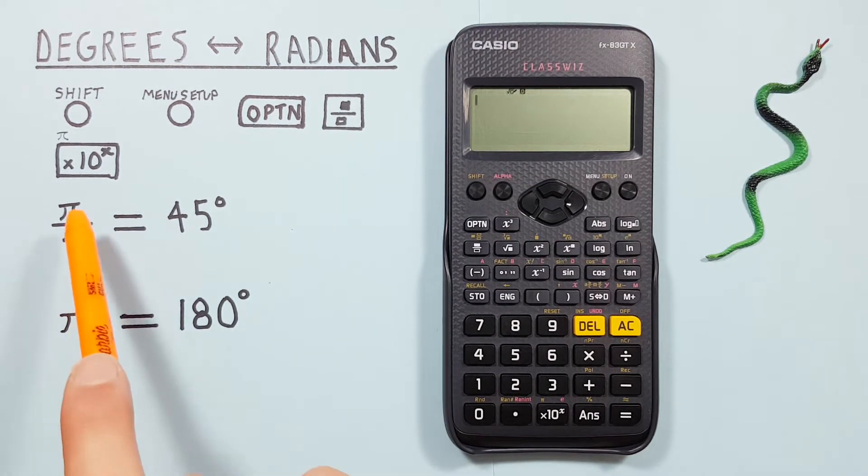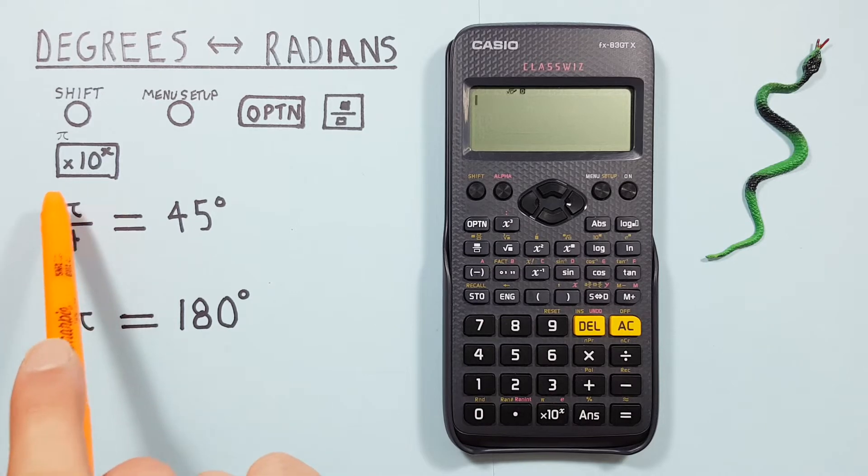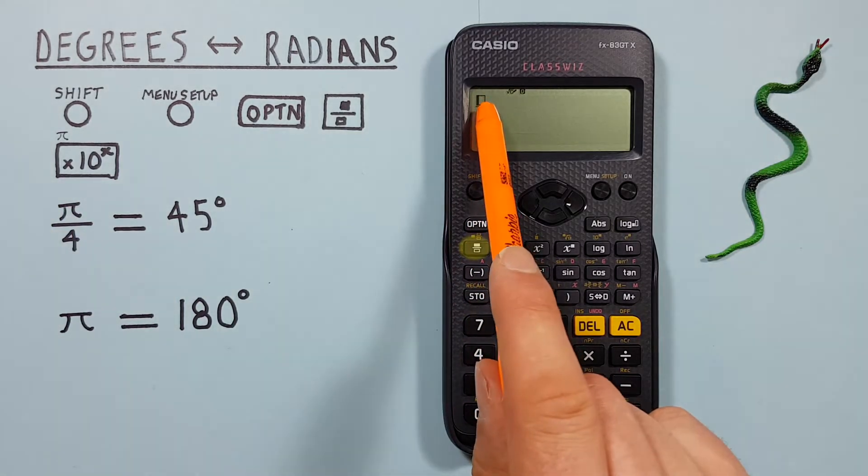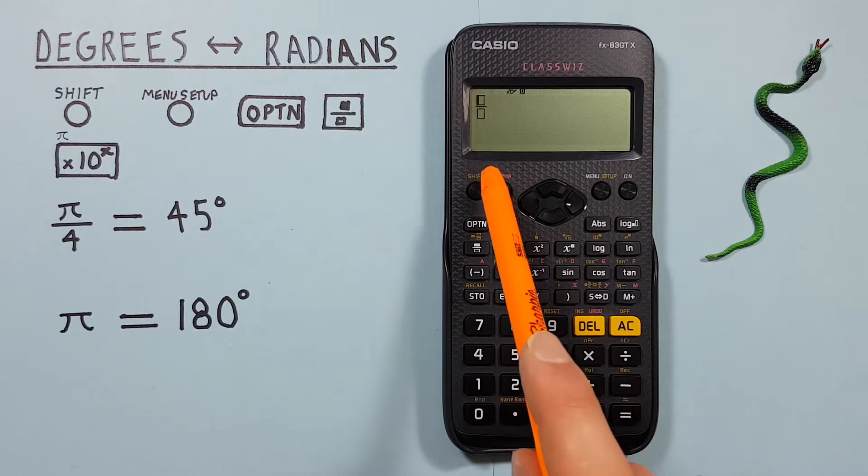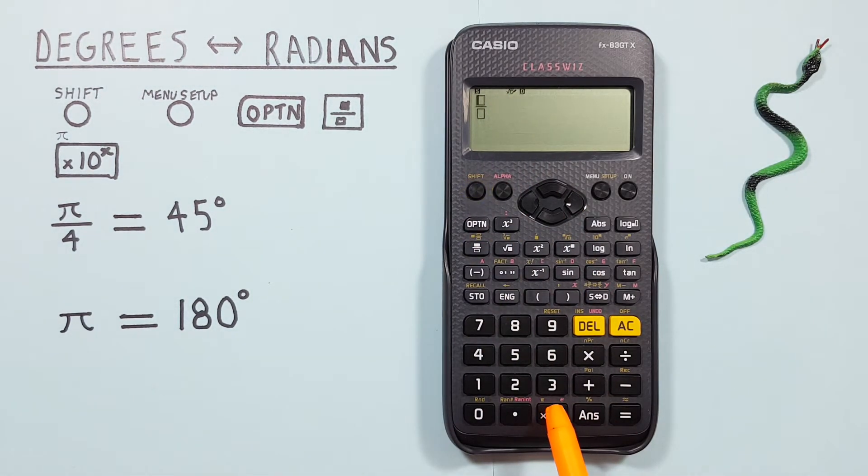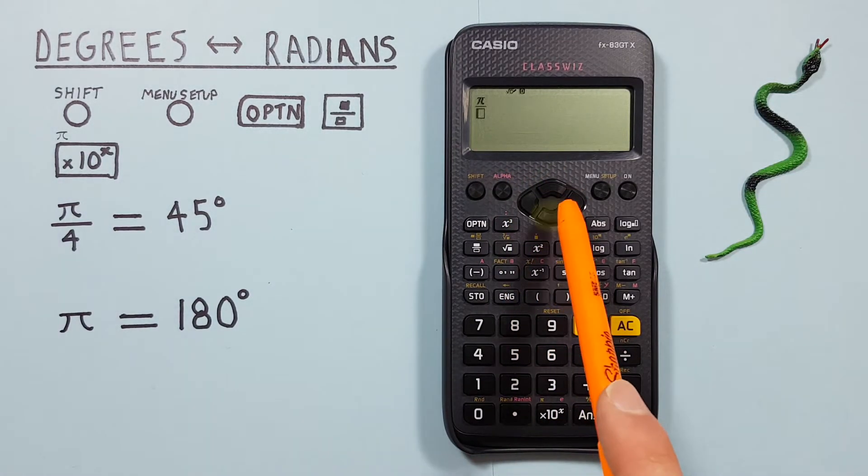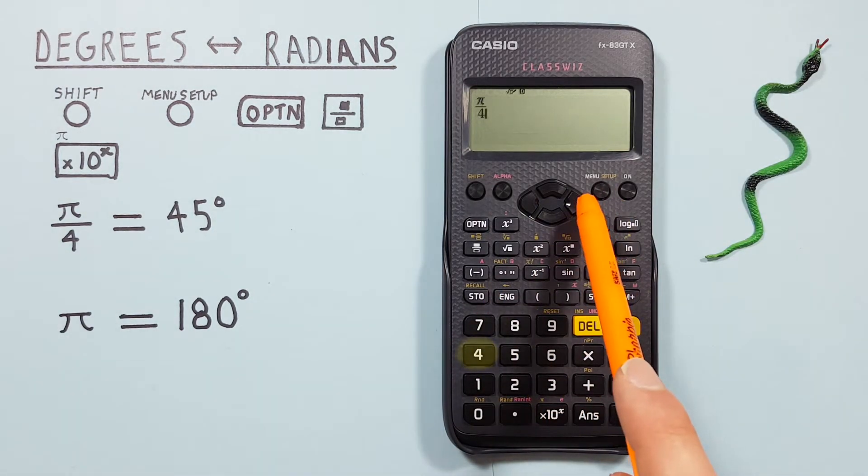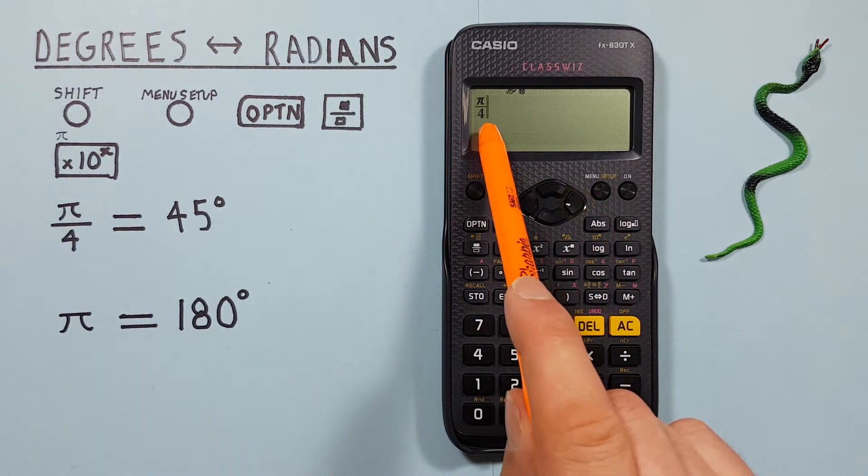Next, we can enter our π over 4. Since this is a fraction, we'll use the Fraction key. Place π in the top box by pressing Shift, times 10 to the x, with the Shift function of Pi. There we go. Scroll down, enter our 4, and then scroll to the right.